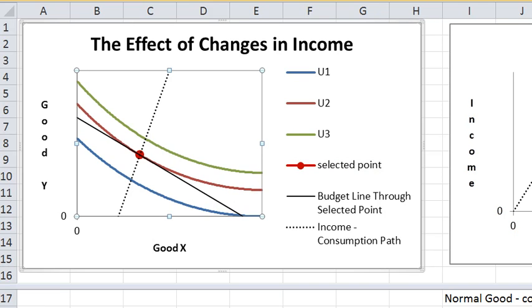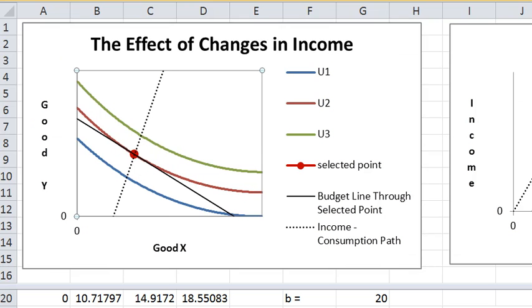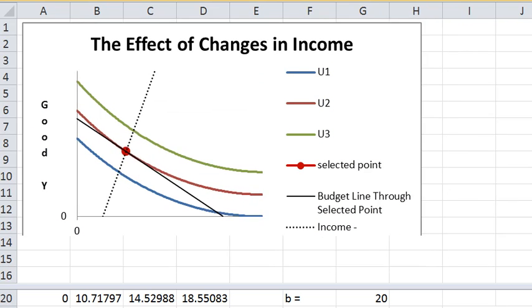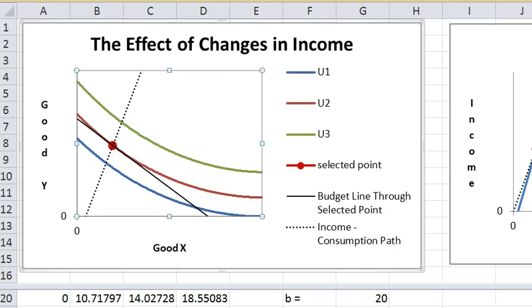Now you can also vary price, so let me raise the price of X and see what happens here. Let's raise the price of X and the budget line should move in. I'll do it more dramatically.